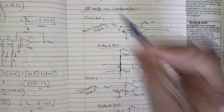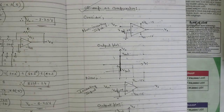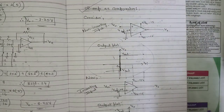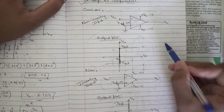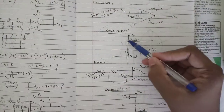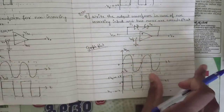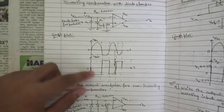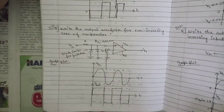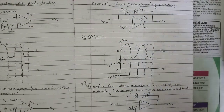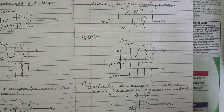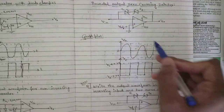One very important topic is op-amp as a comparator. You need to know how it works with zero reference and non-zero reference, along with all circuit diagrams and transfer characteristic output plots for both inverting and non-inverting inputs. Note how the saturation voltage positions change. Also cover: comparators with zero difference, inverting comparator with diode clamps, and the output waveform. For a bounded output zero-crossing detector, two Zener diodes are placed face-to-face in the feedback path of the op-amp.